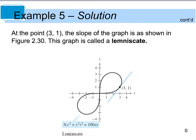Just for those of you that were curious, if you were to have graphed this original function, you would have gotten something that looks kind of like this figure-8 curve, which we did talk about last year in pre-calc. And the slope of the curve at the point (3, 1) looks like this — this right here is the slope that we just calculated.